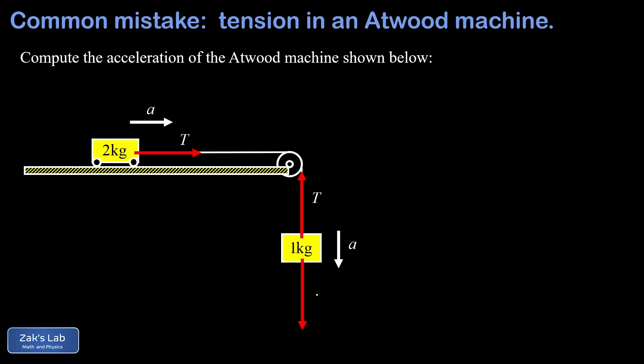So certainly there's nothing wrong with starting out by finding the force of gravity downward on that one kilogram mass. And that was done correctly in the student work. But again, we know the tension must be less than mg. Otherwise this thing wouldn't be accelerating. So we have to leave the tension as an unknown here. It will be the same on both ends of the string, but it's unknown.